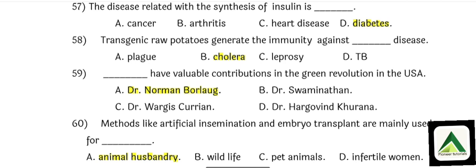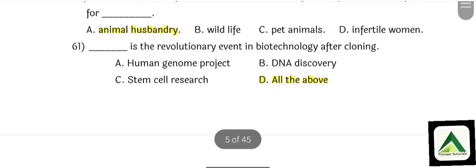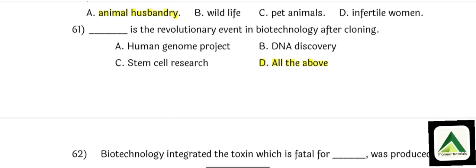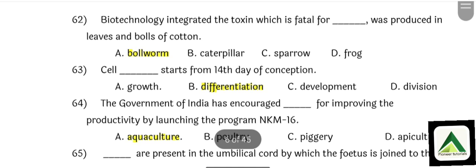Question number 59: Dash has made a valuable contribution in the green revolution in the USA. That is option number A: Dr. Norman Borlaug. Question number 60: Methods like artificial insemination and embryo transplant are mainly used for animal husbandry. Question number 61: Dash is the revolutionary event in biotechnology after cloning. All options after cloning are important, so option number D: All of the above.